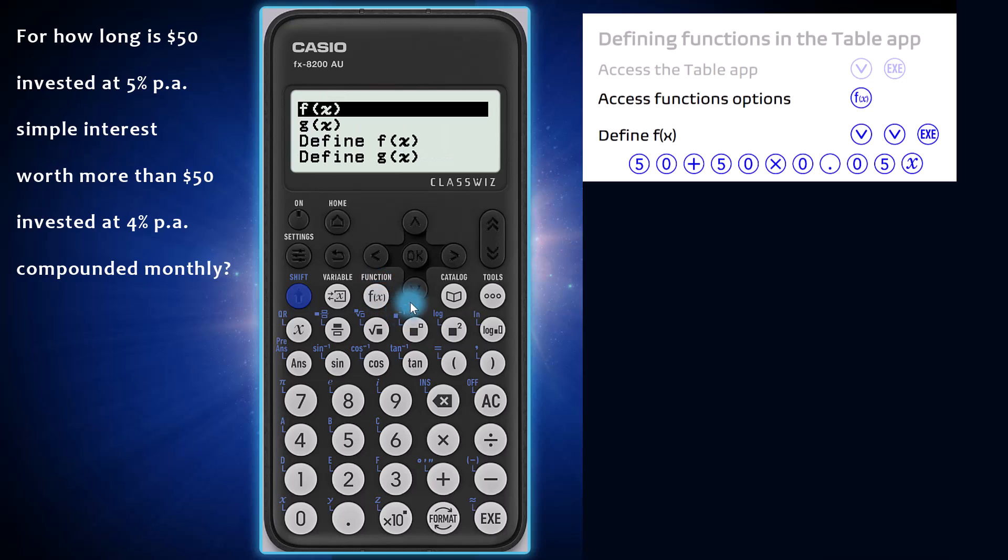I'm going to arrow down and first define f of x. Enter the function f of x as $50 plus $50 multiplied by 0.05x based on the simple interest formula.